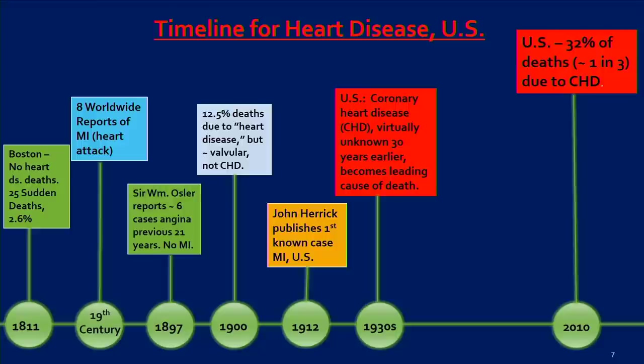This is the timeline for heart disease over the past couple of hundred years in the United States. In 1811, Boston, there were no heart disease deaths, but 25 sudden deaths — that's 2.6%. So even if all of those are heart disease, it's 2.6% of cases. The entire 19th century, there are only eight worldwide published papers on heart attack.